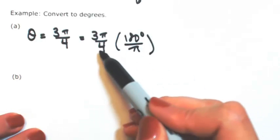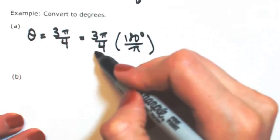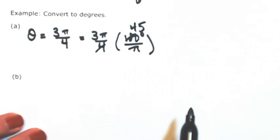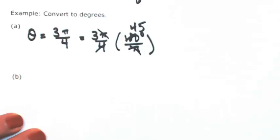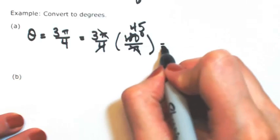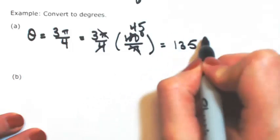Okay, 4 goes into 180, 45 times. The pi's cancel. So then 3 times 45 would be 135 degrees.